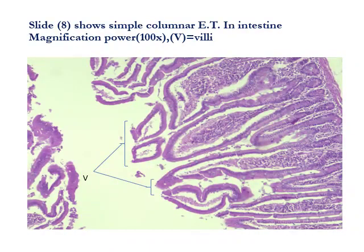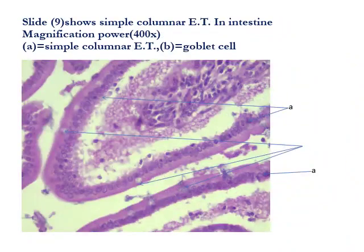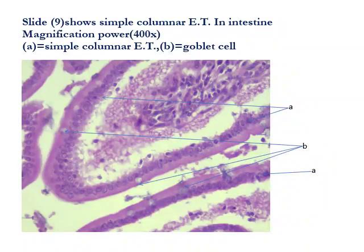This slide shows simple columnar epithelial tissue in the intestine at higher magnification, where A refers to the simple columnar epithelial tissue while B refers to the goblet cell. The villi are visible in the intestine. This type is a simple non-ciliated columnar epithelial tissue.